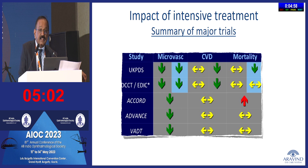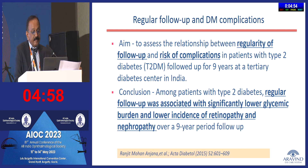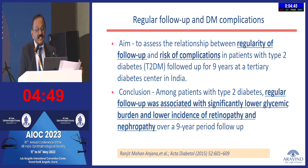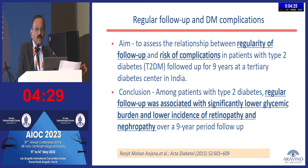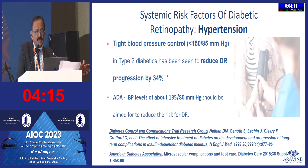A study from the same group assessed the relationship between regularity of follow-up and risk of complications in type 2 diabetes patients followed for up to nine years. It found that regular follow-up was associated with significantly lower glycemic burden and lower incidence of retinopathy and nephropathy, clearly showing that close follow-up of these patients helps reduce the chances of damage to the retina or kidneys.